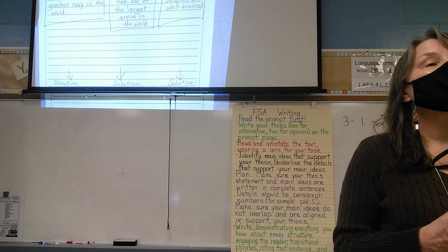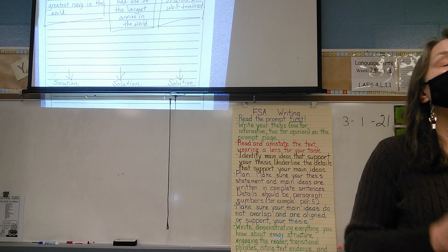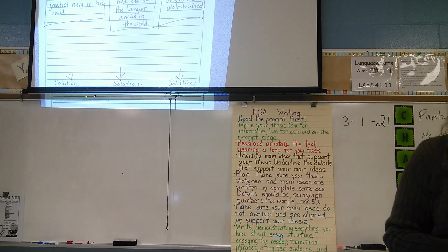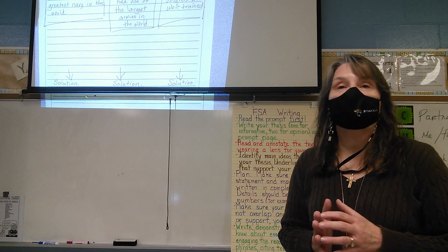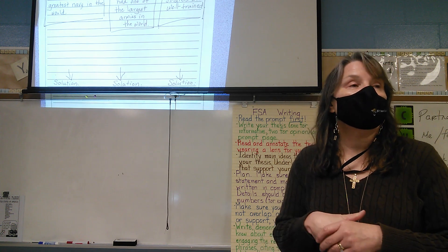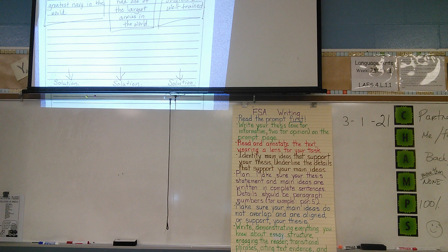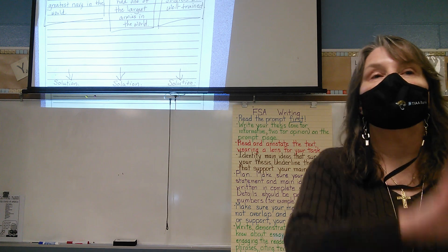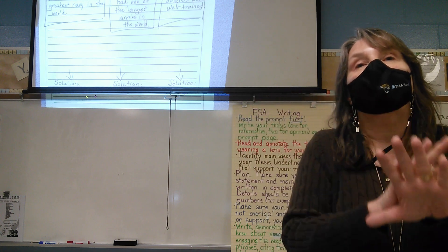For some of you who revised your work in light of last Friday's writing lesson, you revised your work so that you had the main ideas that we talked about. Some of you chose not to do that, which affected your score on your essay — but that was definitely your choice. We want to make sure that we don't overlap. So you have to be really careful if you're choosing main ideas like 'the British Army was well-trained' and 'the British Army was large' — you have to be very, very careful when you're aligning your details.